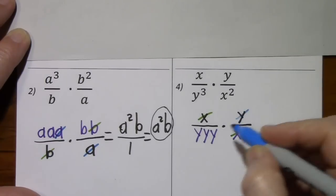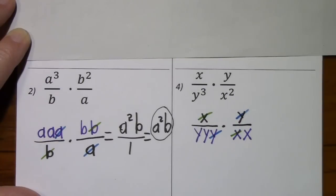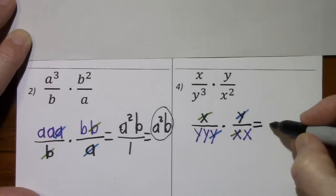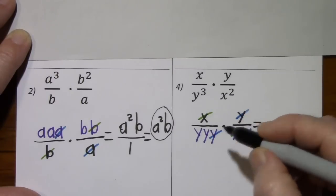And now x cancels x. We have y cancels y. But in this case, we need a numerator. We can't just have air up here.